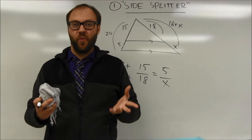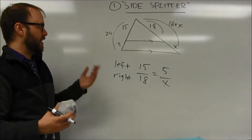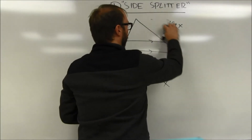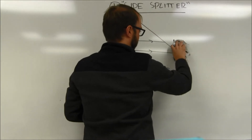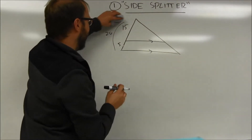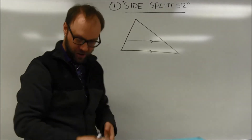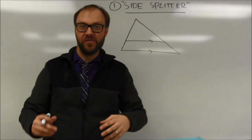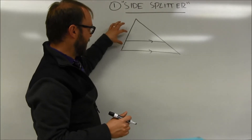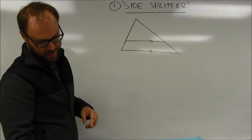A lot of times I'll decide what comparison to use based on the numbers I'm given, which can vary from problem to problem. One important thing to be careful about when dealing with the side-splitter relationship is what is NOT side-splitter. These two sides have to be split — make sure you're comparing the correct parts.